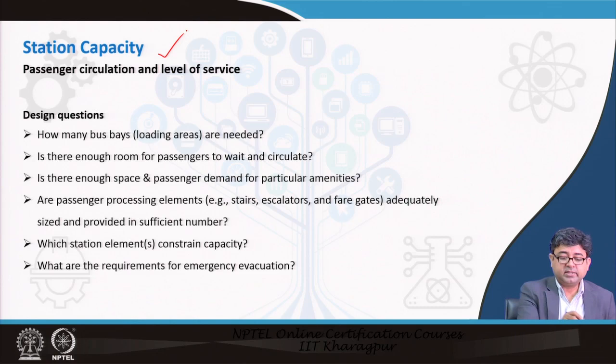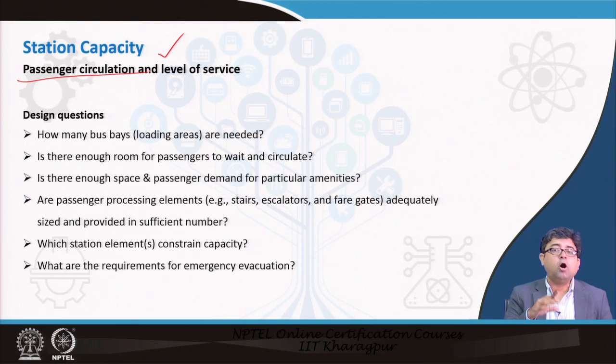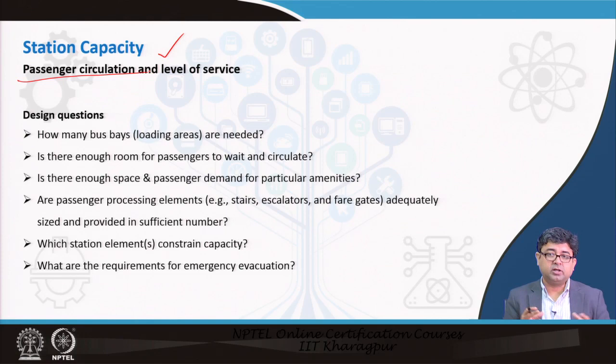When we talk about station capacity, what we are essentially dealing with is passenger circulation and its level of service. We want to know how easily passengers can circulate in the station when boarding, alighting, or waiting to get on the transit line. Circulation is the parameter on which station capacity depends.